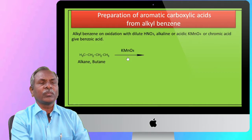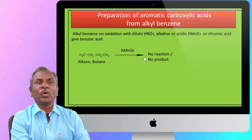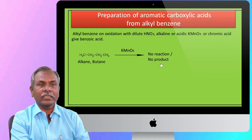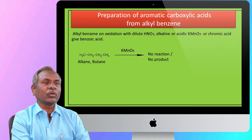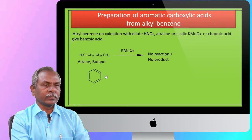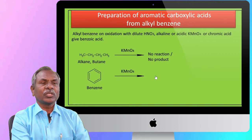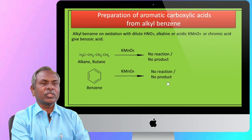Butane on oxidation with potassium permanganate gives no reaction — meaning there is no product and no formation of any product.